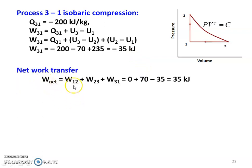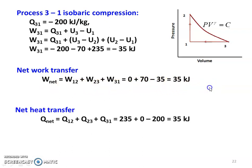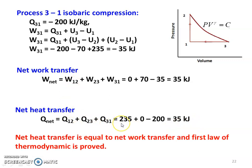The net work transfer: W net equal to W12 plus W23 plus W31, equal to 0 plus 70 plus (minus 35) equal to 35 kilojoules. The net heat transfer: Q net equal to Q12 plus Q23 plus Q31, equal to 235 plus 0 plus (minus 200) equal to 35 kilojoules. Net work transfer equals net heat transfer, confirming the first law of thermodynamics is satisfied. So both are equal and the first law of thermodynamics is proved.